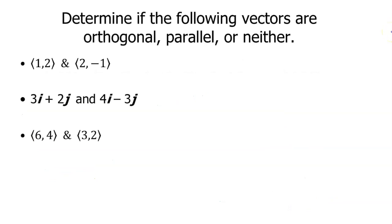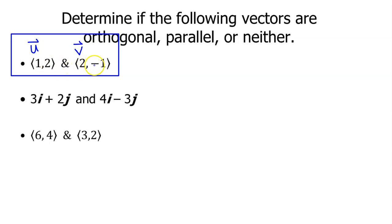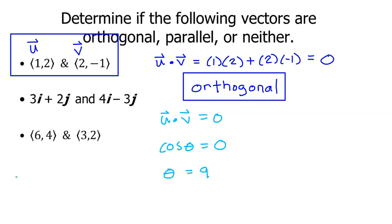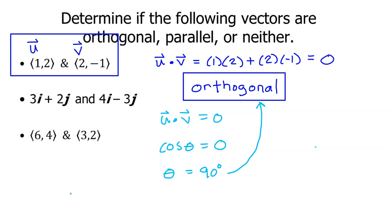Let's determine if the following vectors are orthogonal, parallel, or neither. For the first pair, calling them vector U and vector V, the dot product of U times V is 1 times 2 plus 2 times negative 1, which is 2 minus 2, equaling 0. This means that vector U and vector V are orthogonal, because if the dot product equals 0 then cosine theta equals 0, which means theta is 90 degrees, making the vectors perpendicular or orthogonal. Just memorize that if the dot product is 0, the vectors are orthogonal.